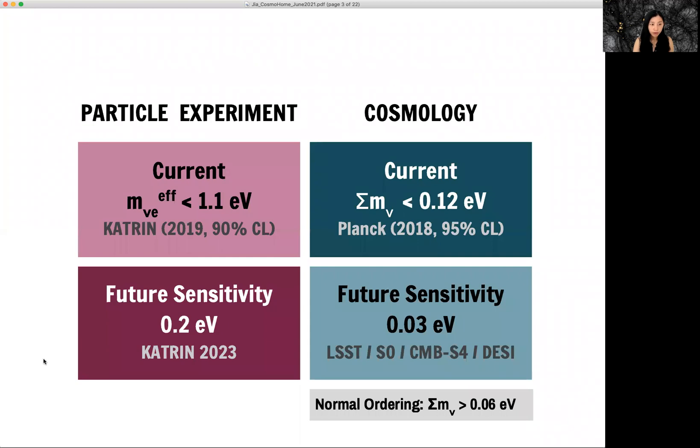From particle experiment and cosmology, we can already have some answer. From current experiment, we can get 1.1 EV from the Katrina experiment.